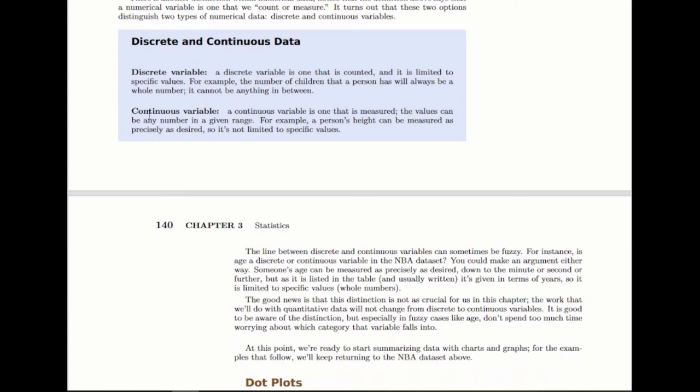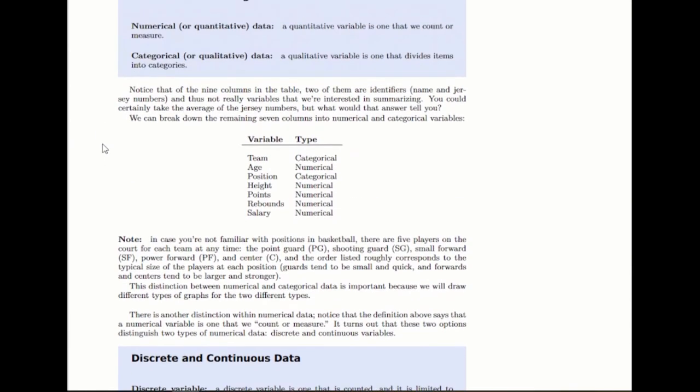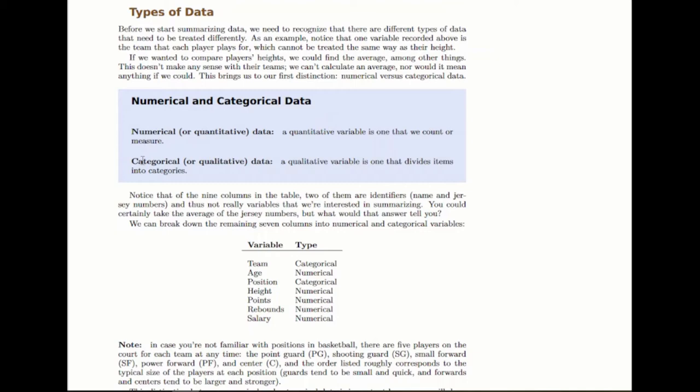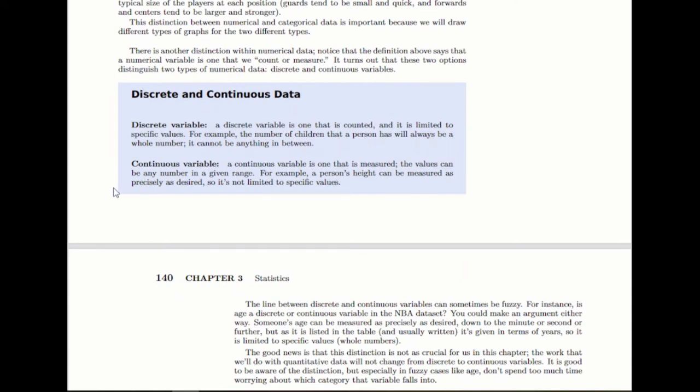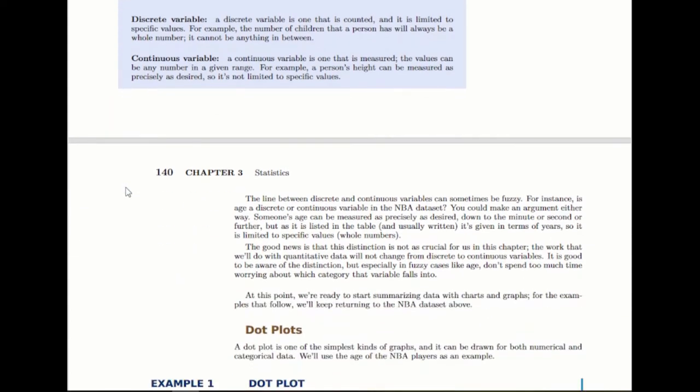This isn't a very important distinction, because sometimes the line is a bit fuzzy, and it turns out we don't really treat those any differently. Numerical and categorical data we do treat differently, but discrete and continuous, we tend to do the same things regardless. So it's not quite as important.